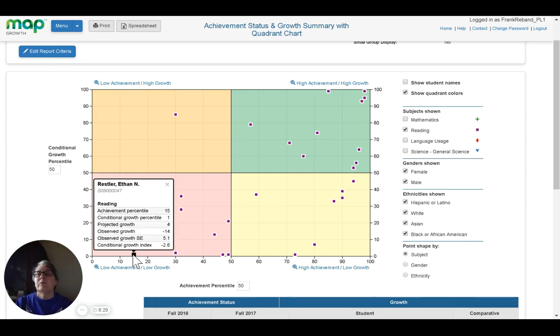If I want to have even more information, I can click on this and find more information about this particular student, including the percentile, which we were right about. It was for 15 percentile on achievement. Conditional growth percentile was only one, and projected growth and observed growth, and this would be a major area of concern.